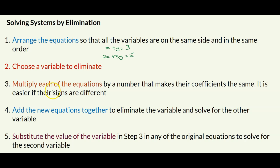We find a number to multiply so we end up with the same least common multiple for the variable we plan to eliminate. Then we add the equations together — sometimes subtract — to eliminate that variable. Next, we solve for the remaining variable, and finally use substitution to solve for the variable that was eliminated.